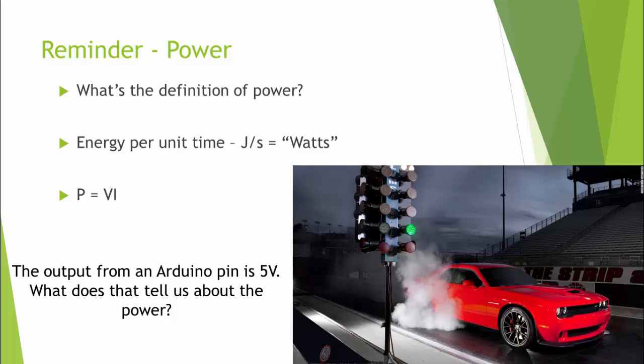Hopefully you looked at the equation and said: I know my voltage is 5 volts, but I don't know my current. We know that the potential combined with a given device tells us our current. So while we may not know our current, that potential will determine the current. Therefore, the potential in combination with a device tells us the power output.